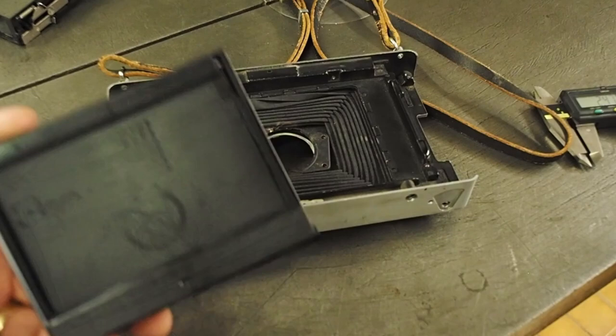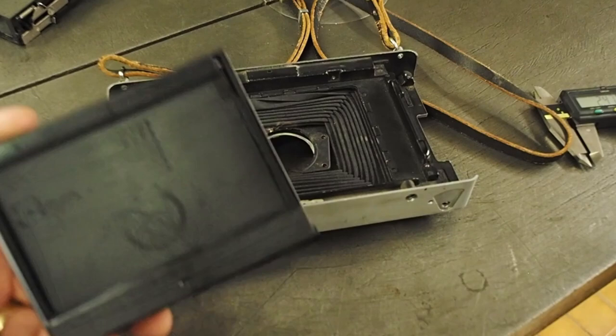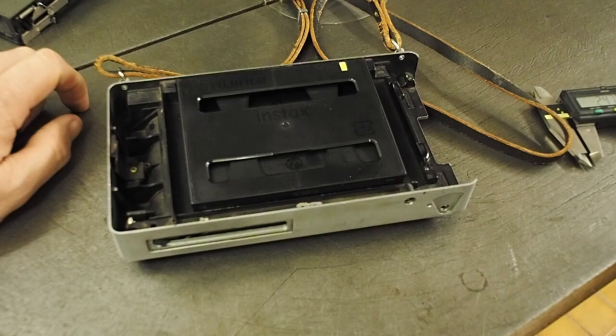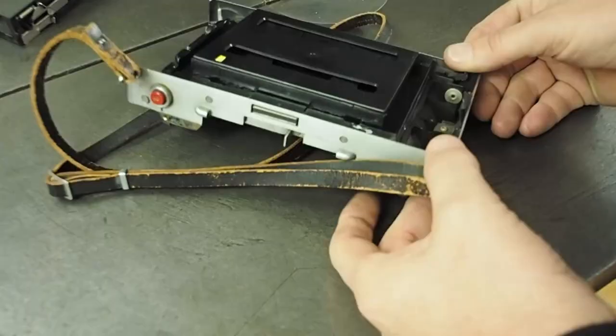The film pack from Fuji for Instax actually fits quite snugly into the back of a Polaroid land camera. So at one level there are some possibilities to actually do this.